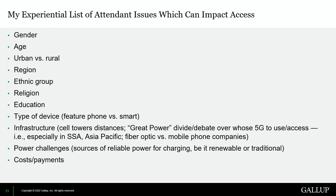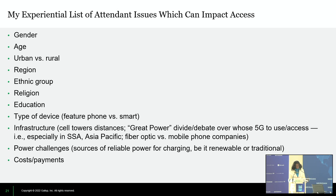From working on the ground, I've identified key challenges to connectivity and access: gender, age, urban versus rural environment, and what region of a country you live in — for example, the southern United States has the least access. Language is also a barrier, since most of the internet is translated into major primary languages, so if you don't speak one of those, you're excluded. Education, type of device, and the fact that in many rural developing-world areas people are still using feature phones, not smartphones, all matter.